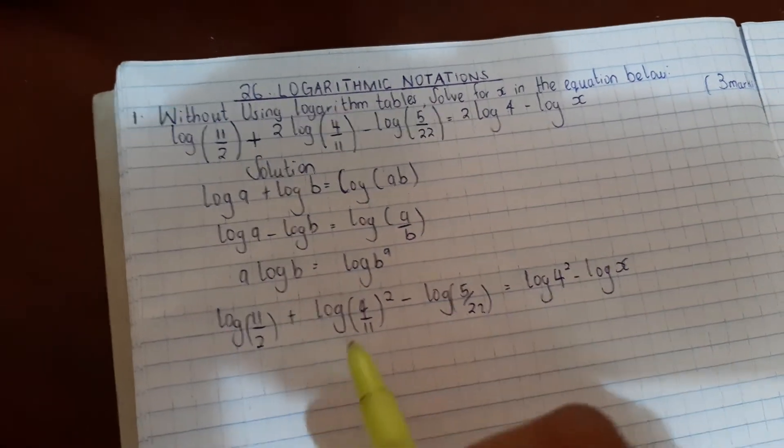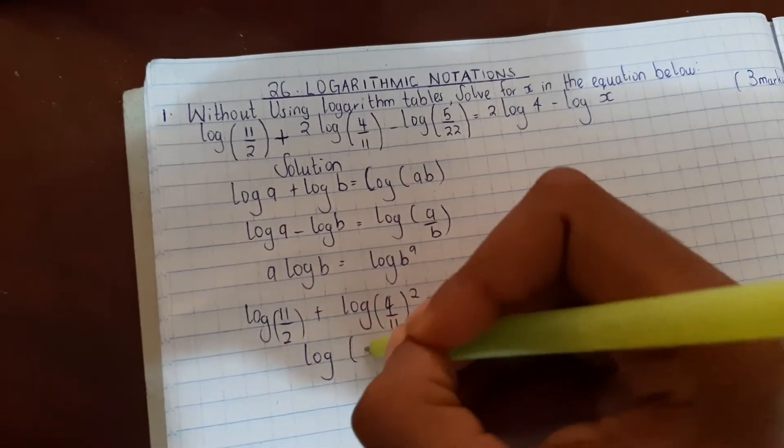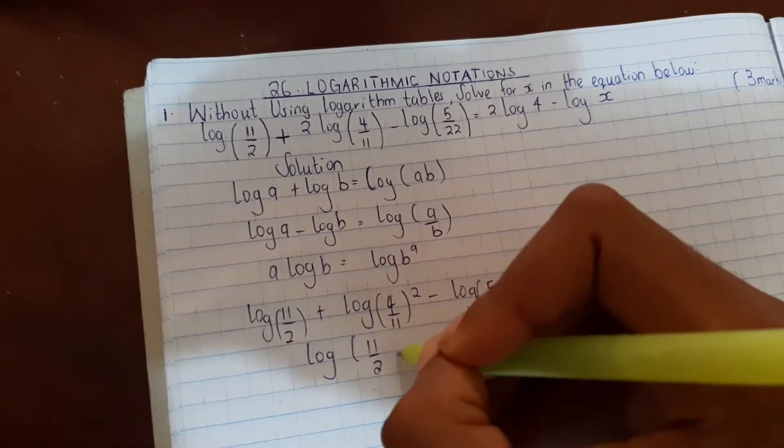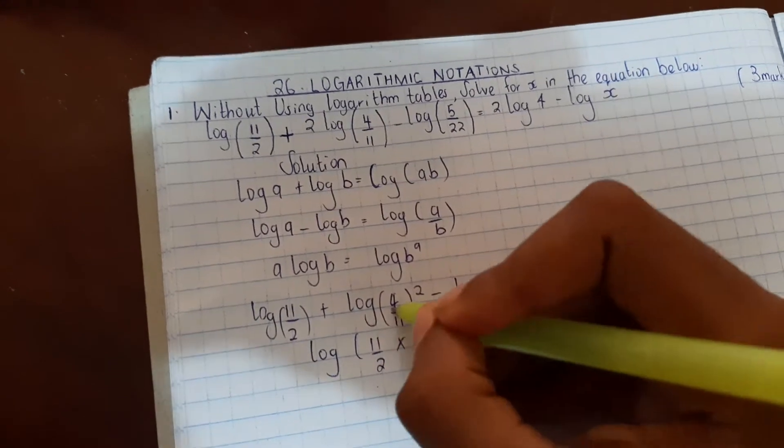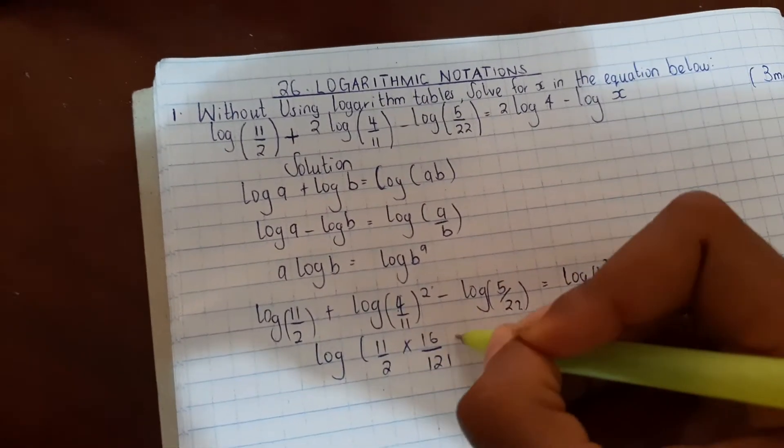So, the first step we use log a plus log b. So we have log in brackets 11/2 times 4 squared which is 16, over 11 squared which is 121.